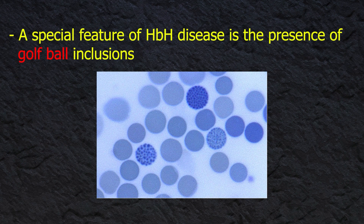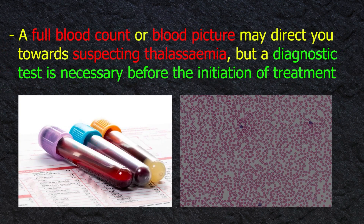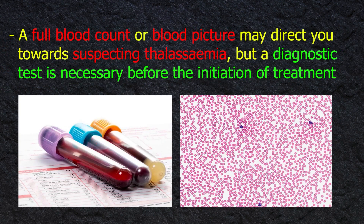A special feature of hemoglobin H disease is the presence of golf ball inclusions — these are precipitated beta tetramers formed due to the deficiency in alpha chains. A full blood count and blood picture may direct you toward suspecting thalassemia, but a diagnostic test is necessary before the initiation of treatment.